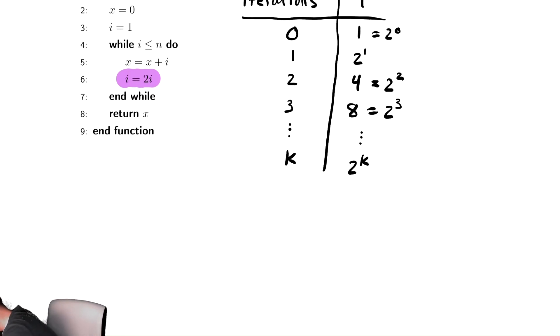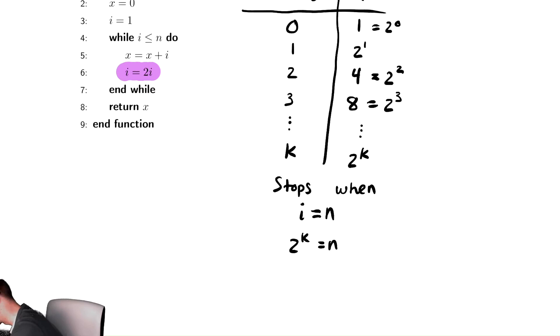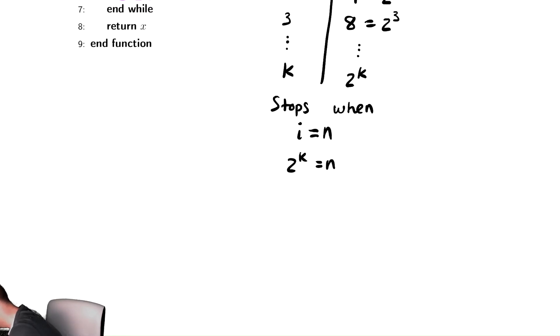So this stops when i is equal to n, or approximately n, and i is equal to 2 to the k. So it's 2 to the k equals n. We want to solve that for k. So if we take a log base 2 of both sides, we get k equals log base 2 of n. So this while loop iterates approximately log base 2 of n times.